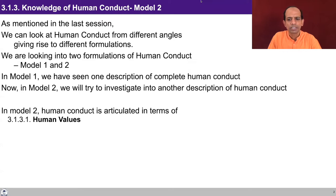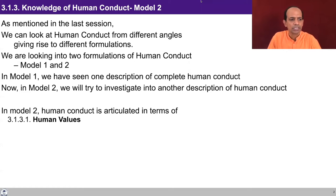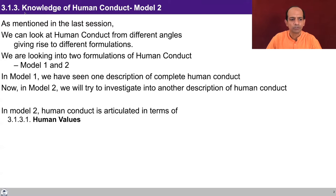In Model 1, we saw one description of the complete human conduct — realization being at the base of coexistence, and the activities of block B2 getting self-organized, along with behavior, work, and participation. In Model 2, human conduct is articulated in terms of three things: human values, policy, and character.